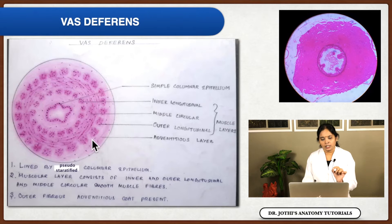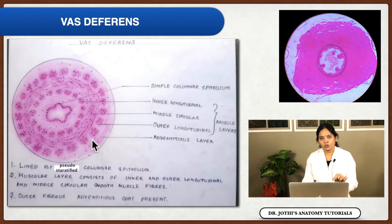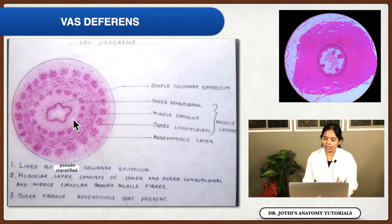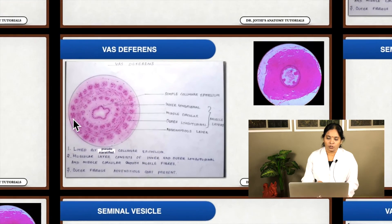In summary, the vas deferens is a tubular structure with the mucous membrane thrown into folds, giving a star-shaped lumen. The lining epithelium is pseudostratified columnar epithelium.